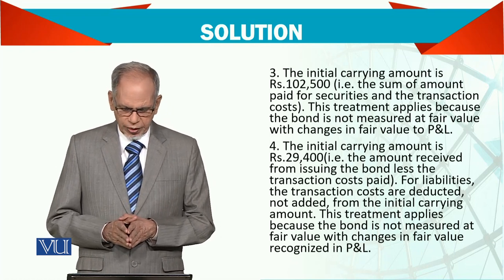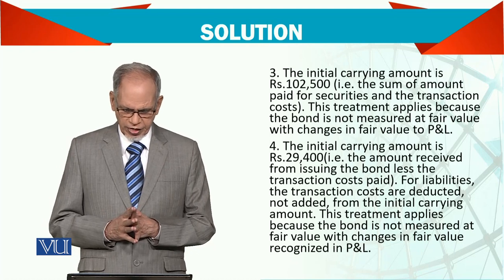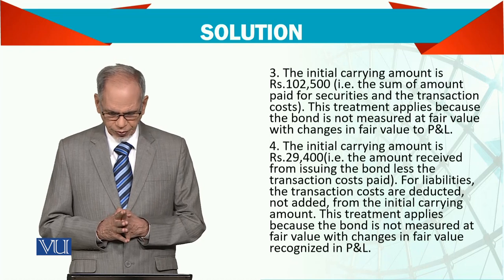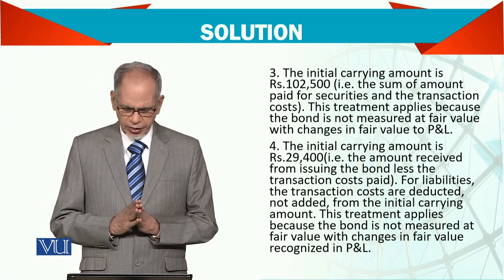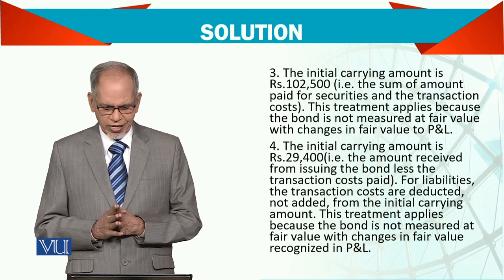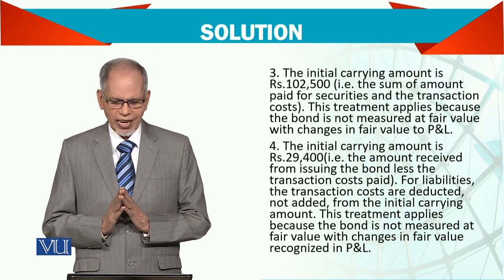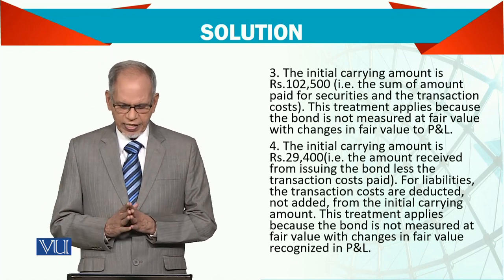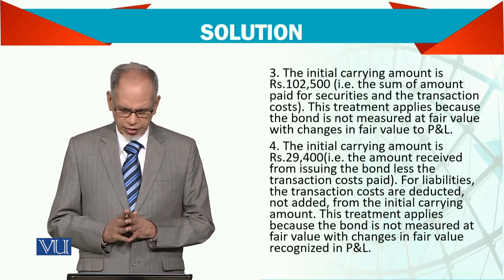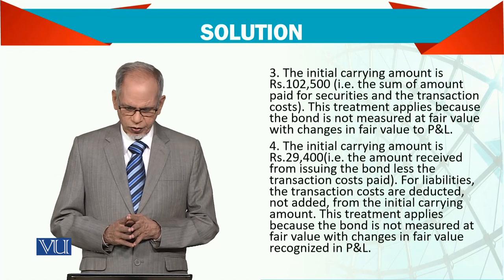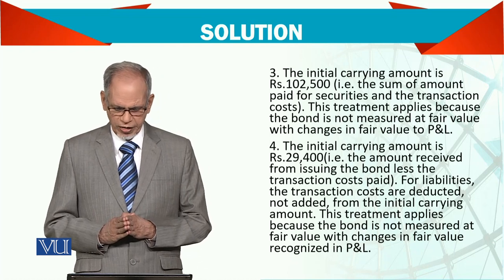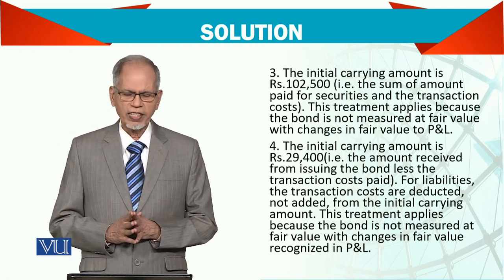The fourth one: the initial carrying amount is Rs.29,400 — the amount received from issuing the bond less the transaction cost. It is a liability, so you reduce it. For liabilities, the transaction costs are deducted, not added. If you are buying an asset, it is added. But if you are issuing a liability, it is deducted from the initial carrying amount. This treatment applies because the bond is not measured at fair value with changes recognized in profit and loss.